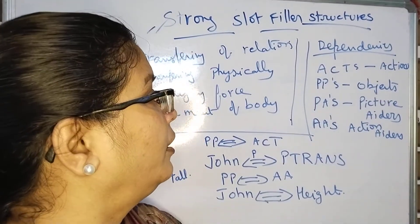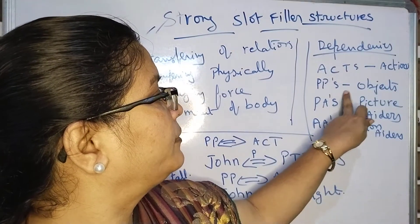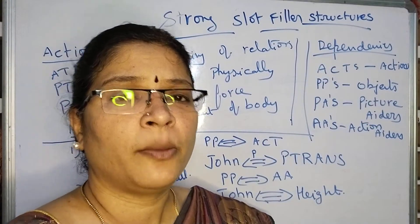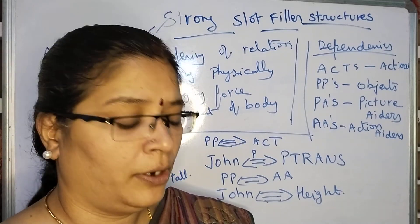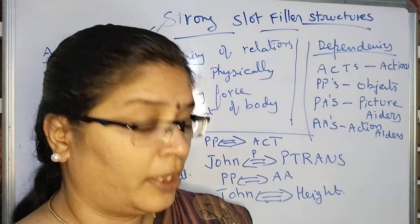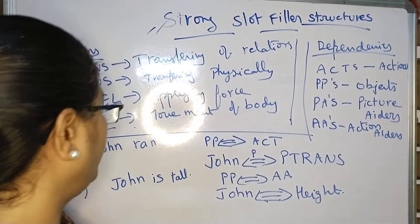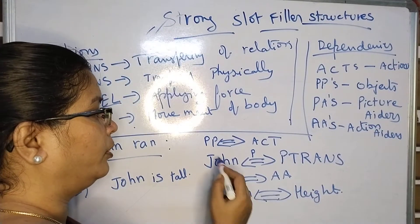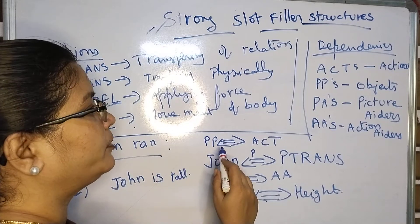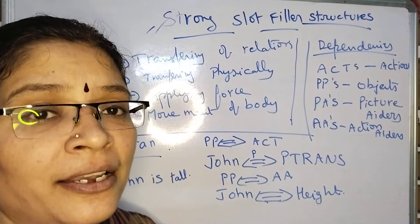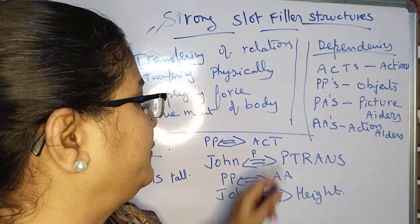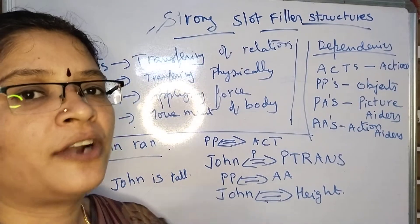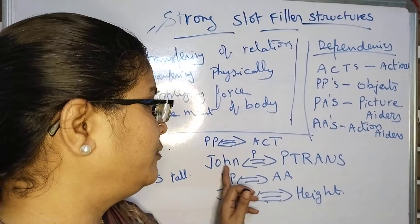The various kinds of dependencies are: ACTS for actions, P-Ps for objects, P-As for picture aiders, and A-A for action aiders. For the statement 'John Ran,' we represent P-P to ACT. John is the object, that is P-P, and Ran is one kind of action, so we represent ACT. This means John P-Trans — he is physically transferring from one place to another place by running.